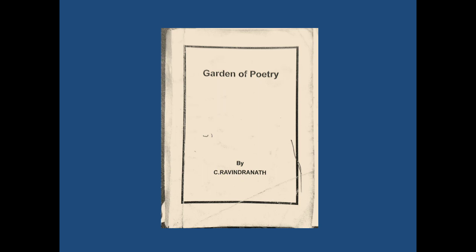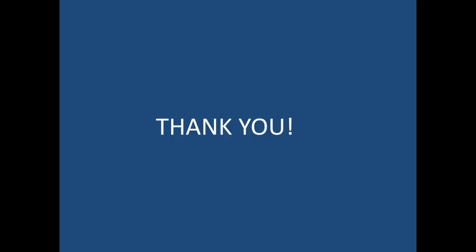For poems, you have to buy this text that you are seeing on your screen, entitled Garden of Poetry by S. Ravindranath. In this collection you will find all the poems that are prescribed in paper second. And as a student of English literature, one should have the text of their own. I would advise you to buy all these books as soon as possible. So students, that's all for the introduction to the subject and to the course. Thank you so much for listening.